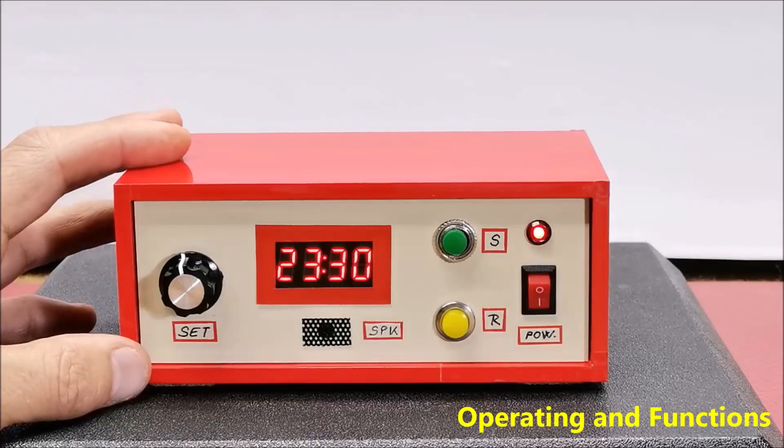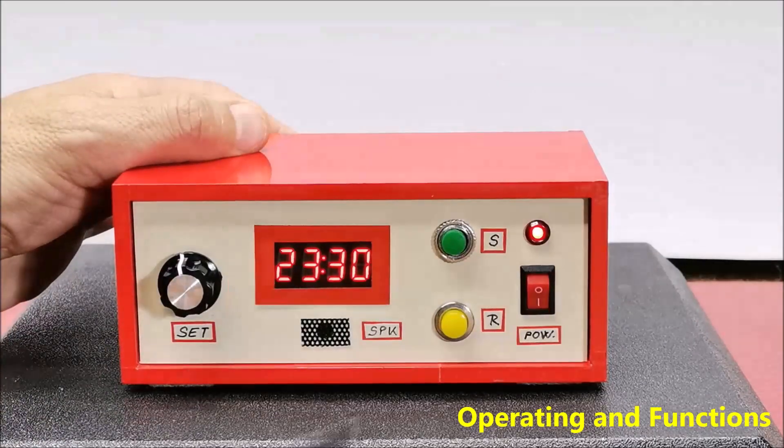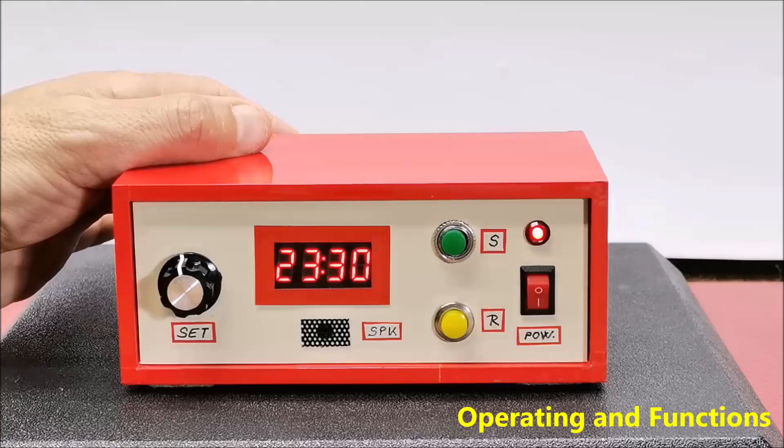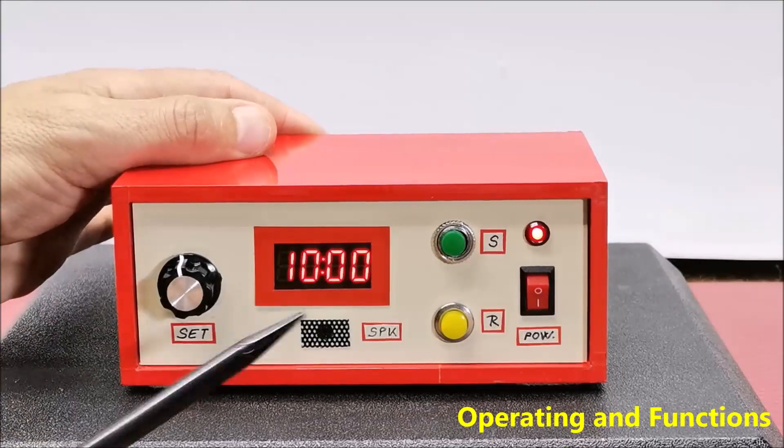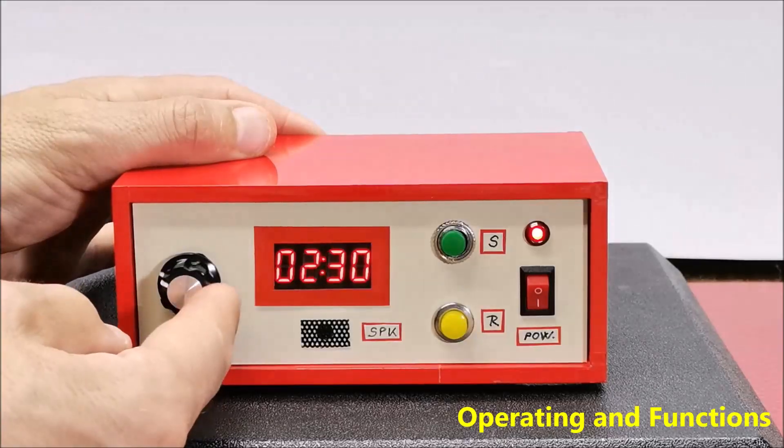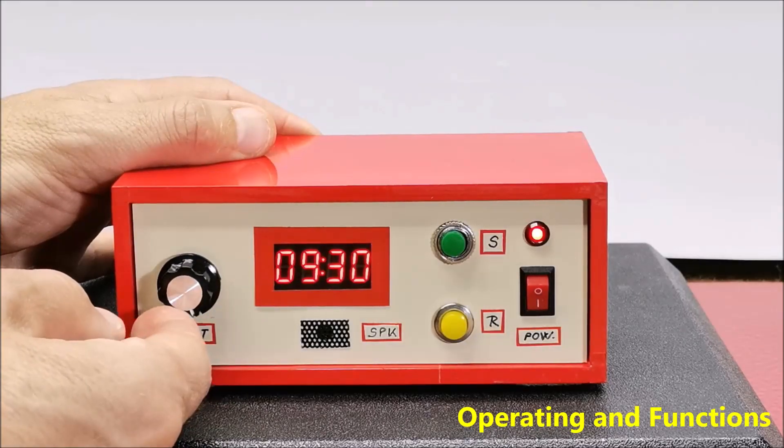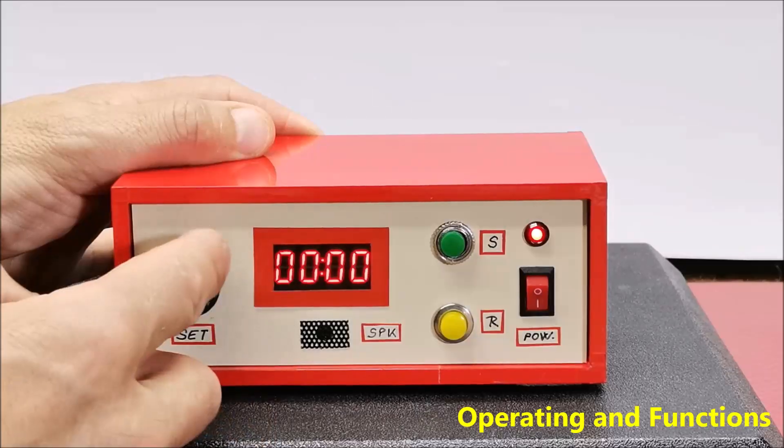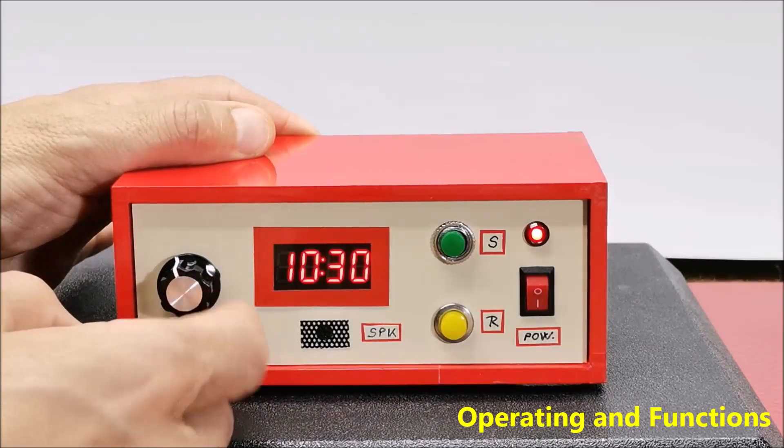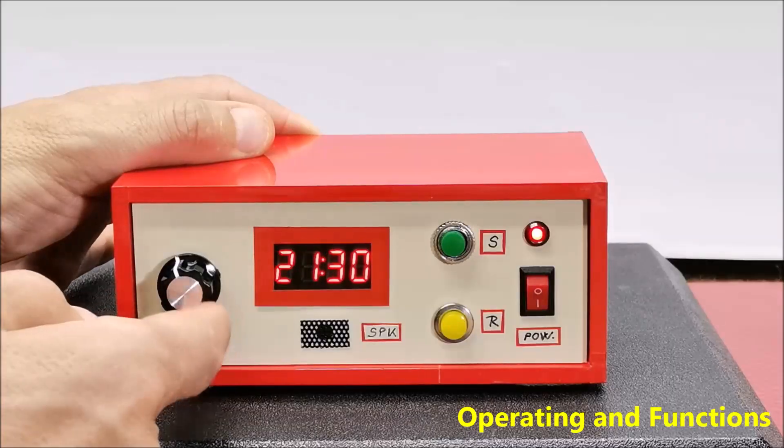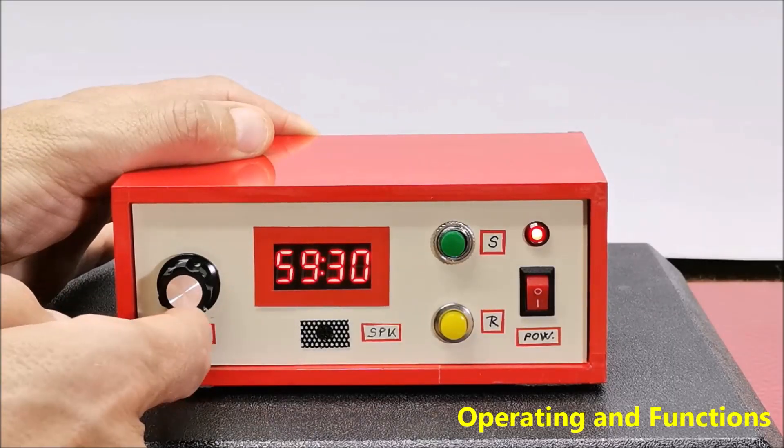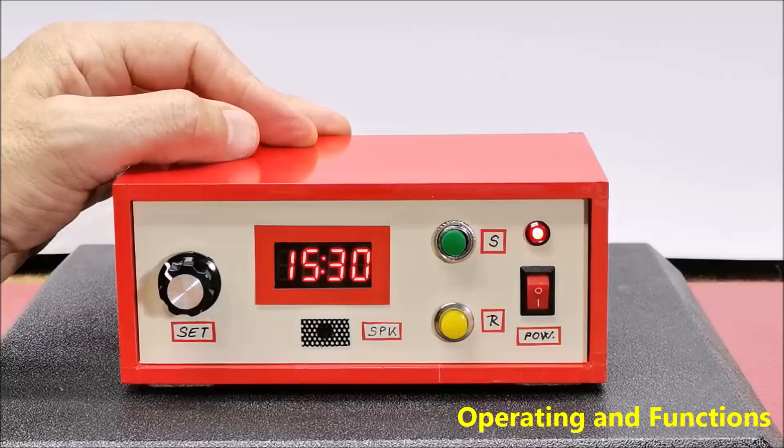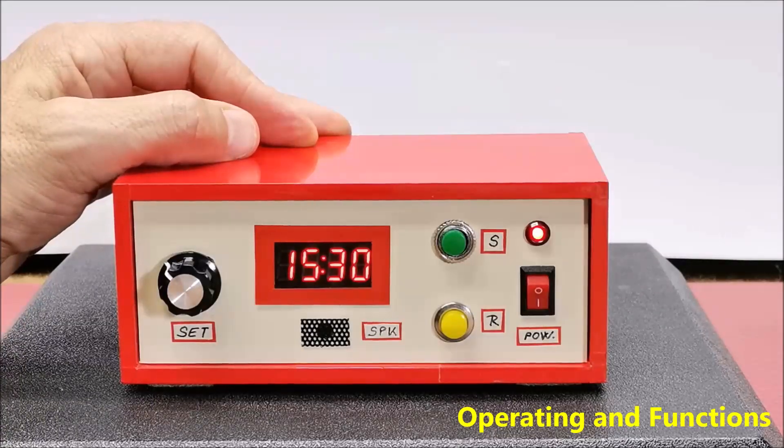Let's also see the function of the range button. By pressing the button the set range appears on the screen for 1 second and then the timer value in that range is displayed. First range is 10 minutes from 0 to 10 minutes. Second range is 30 minutes from 0 to 30 minutes. And third range is 60 minutes, that is the full range from 0 to 60 minutes. With this option we can set shorter intervals much more precisely and easily.